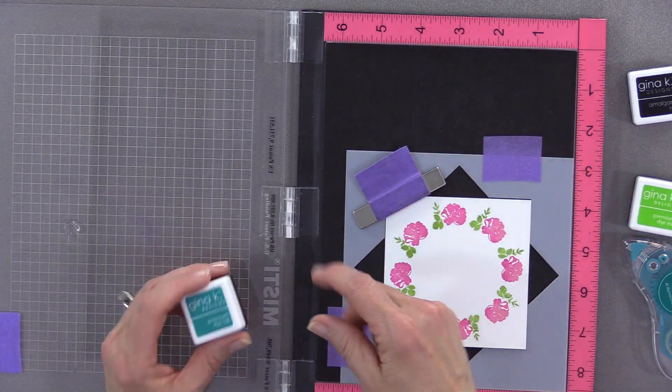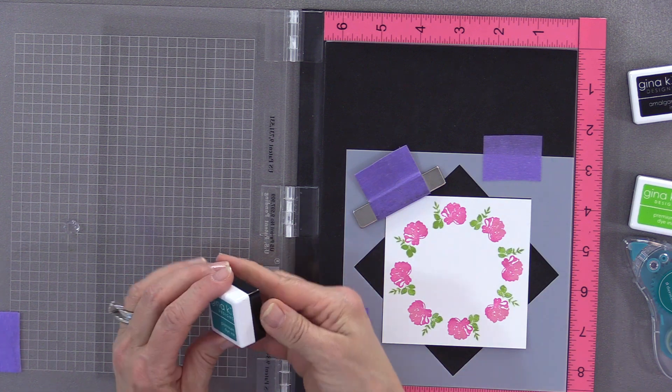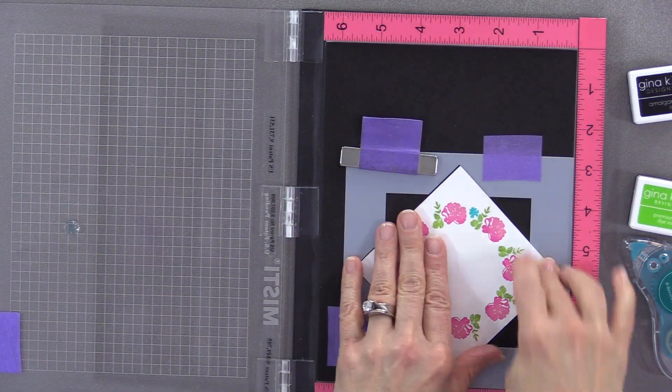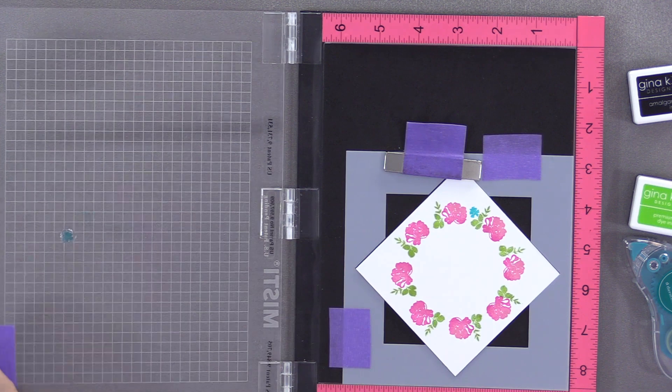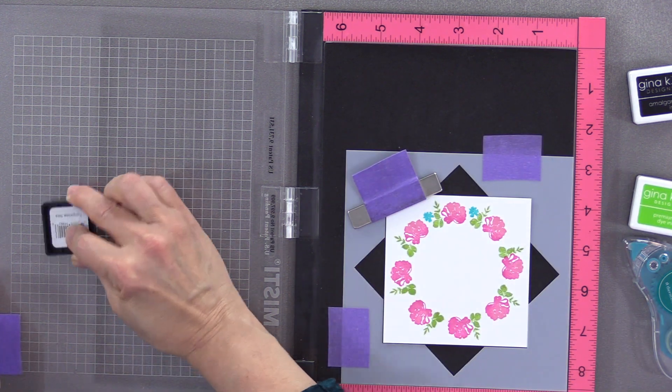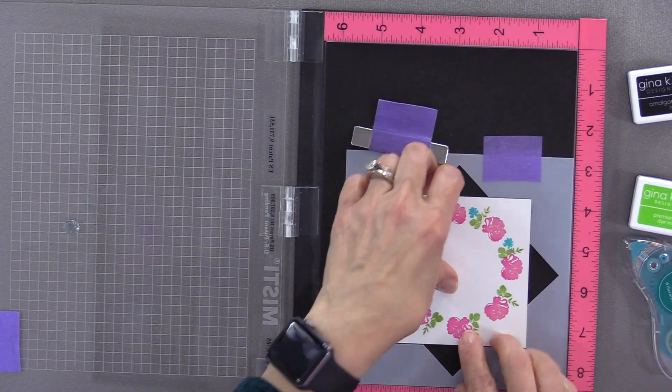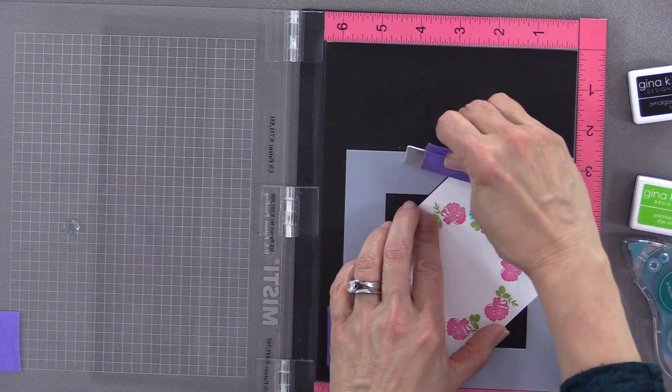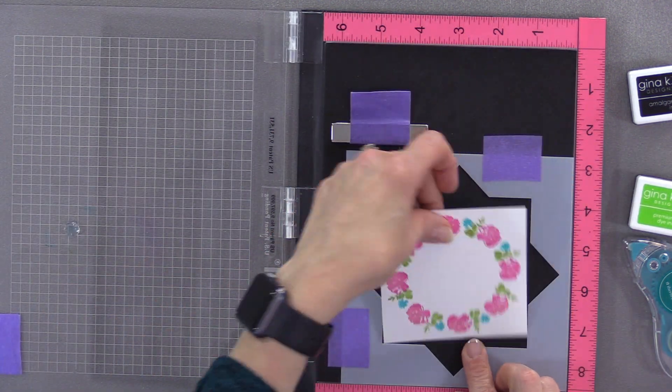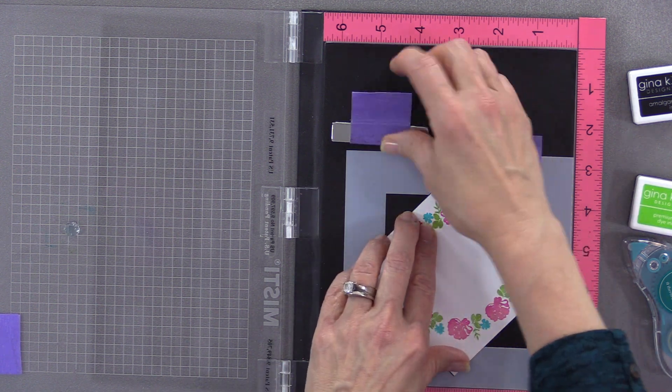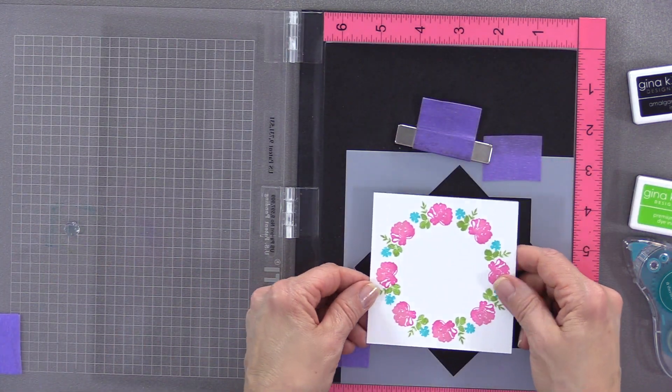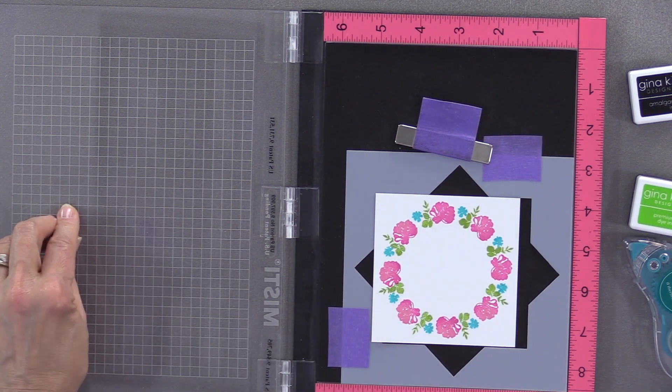For this stamp, I am going to use some Turquoise Sea. I'm going to ink that up with the Turquoise Sea and stamp that all the way around. You can see that fills in the wreath really nicely and adds a little pop of brightness. The pinks are really pretty and very subtle subdued, but that pop of Turquoise really makes it jump out. And then I have my completed wreath. Such great little images for the wreath builder.